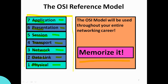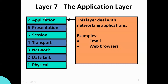Layer number seven is the Application layer. This layer deals with networking applications — it is the layer that interacts with networking applications. Examples include email clients such as Gmail, Hotmail, and Yahoo Mail, as well as web browsers like Google Chrome, Mozilla Firefox, and Internet Explorer.